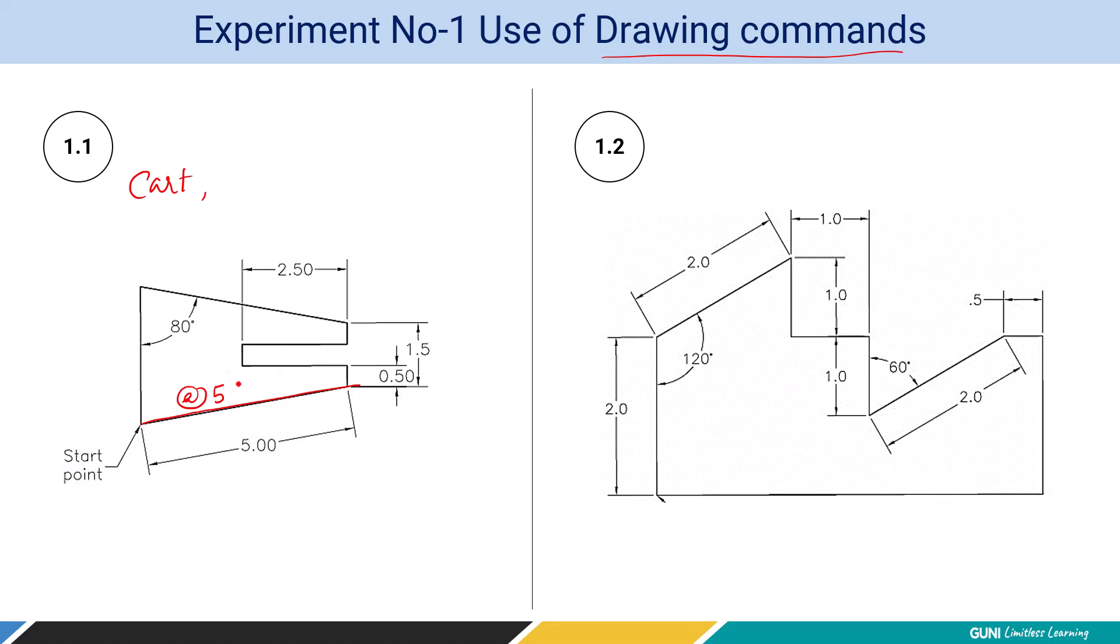At the rate 5 less than 0. This is called polar coordinate method. What does it mean? You are entering a length dimension of 5 units at an angle of 0 degree.